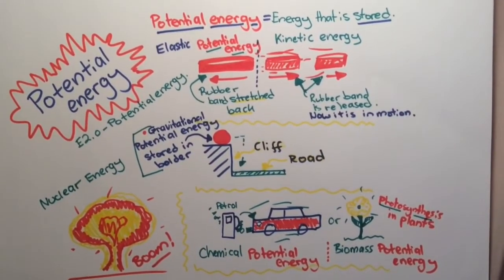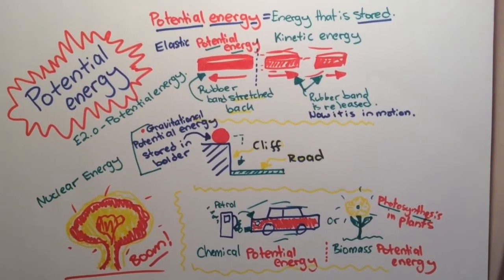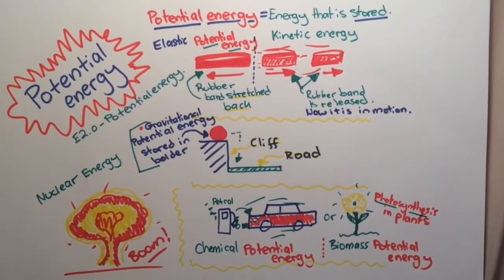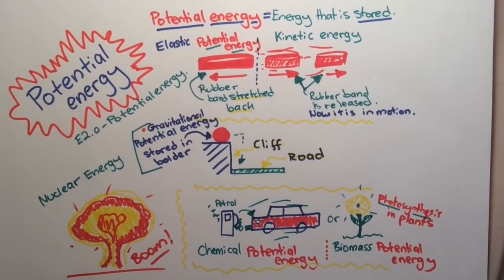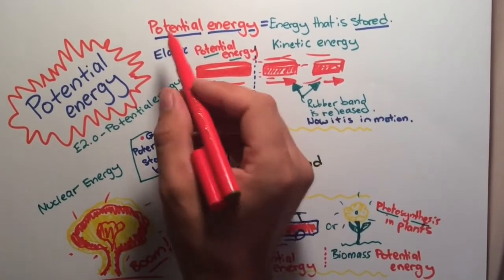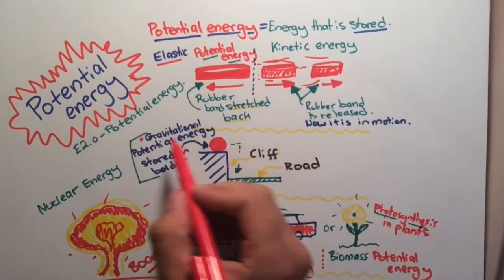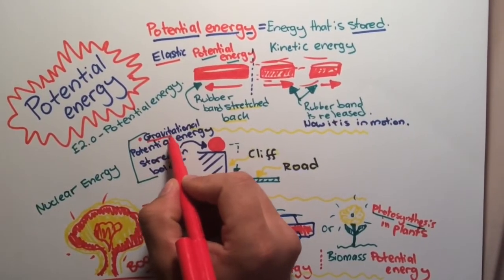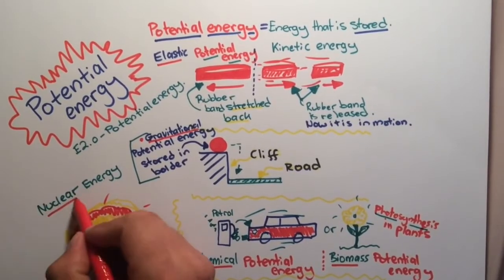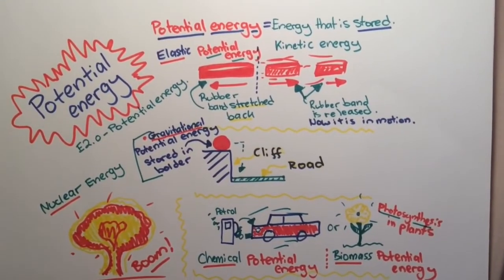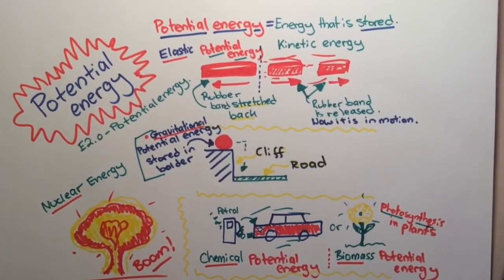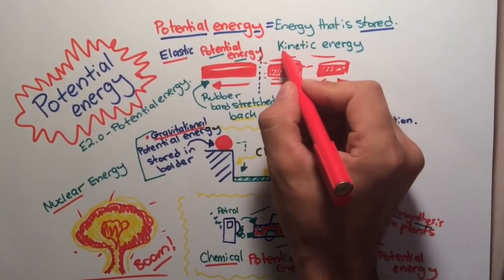Okay, let's sum it up. Another name for potential energy is stored energy. Types of potential energy include elastic, gravitational, chemical including biomass, and nuclear energy. Potential energy of an object only exists when it is not in motion. As soon as it is used, it's classified then as kinetic energy. That's a wrap — stay tuned. Next episode, we're going to talk about classifying energy.